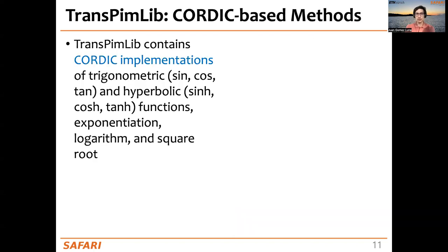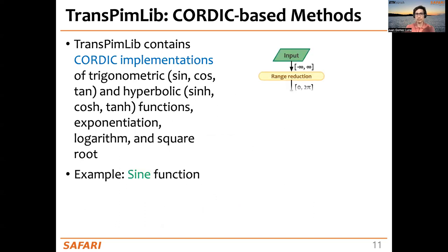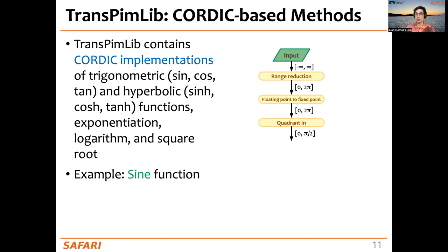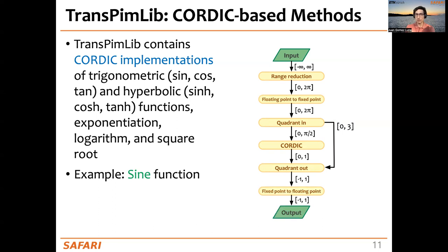Regarding the CORDIC-based methods in TransPIM-Lib, we use CORDIC implementations of trigonometric and hyperbolic functions, exponentiation, logarithm, and square root. As an example, let's take a look at the sine function. First, we perform range reduction to ensure the input is between 0 and 2π. Then we convert from floating point to fixed point, which is natively supported by the PIM system. Next, we identify the quadrant, since the sine function has the same values in 0 to π/2 as in the other quadrants — we just account for the quadrant afterward. Then we apply the CORDIC algorithm to obtain the output, use the quadrant to get the final result, and convert back from fixed point to floating point.